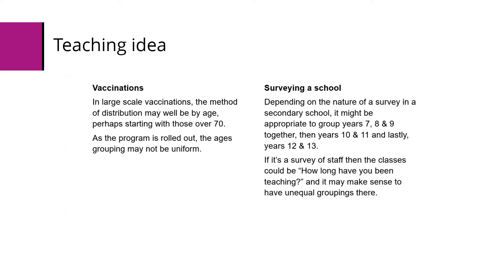Another consideration could be surveying a school. If you're looking at students, depending on the nature of the survey in the secondary school, it might be appropriate to group years 7, 8 and 9 together as key stage 3, and then 10 and 11 key stage 4, and lastly years 12 to 13 as key stage 5. Or if it's a survey of staff, then your classes could be maybe how long have you been teaching. Maybe the ECTs in their first two years of teaching is one group, and maybe then you go up to five years, so three to five years, maybe five to ten next, and then perhaps anybody over ten years is their own group, but different groupings are leading towards potentially unequal class widths.